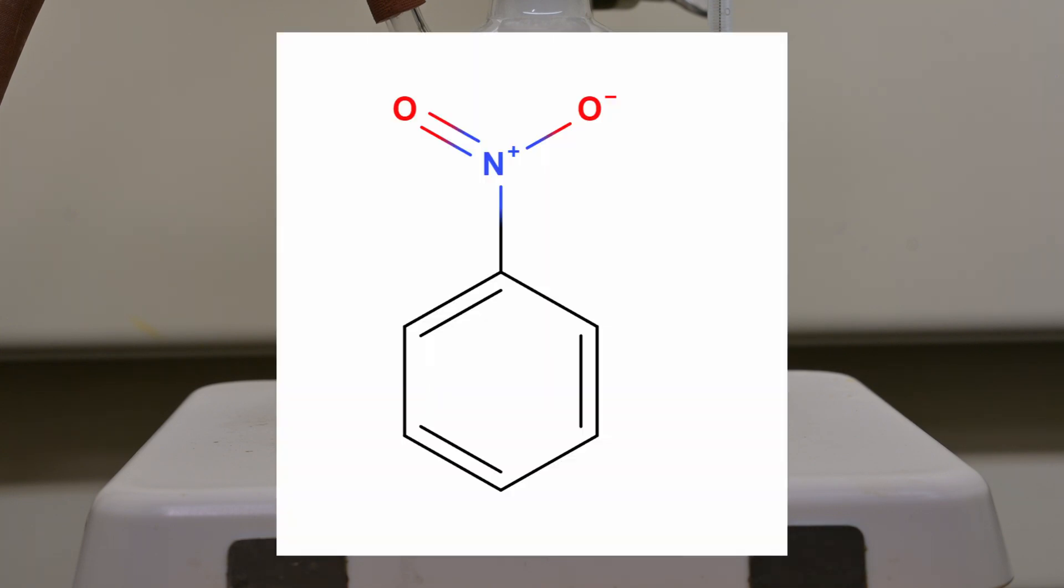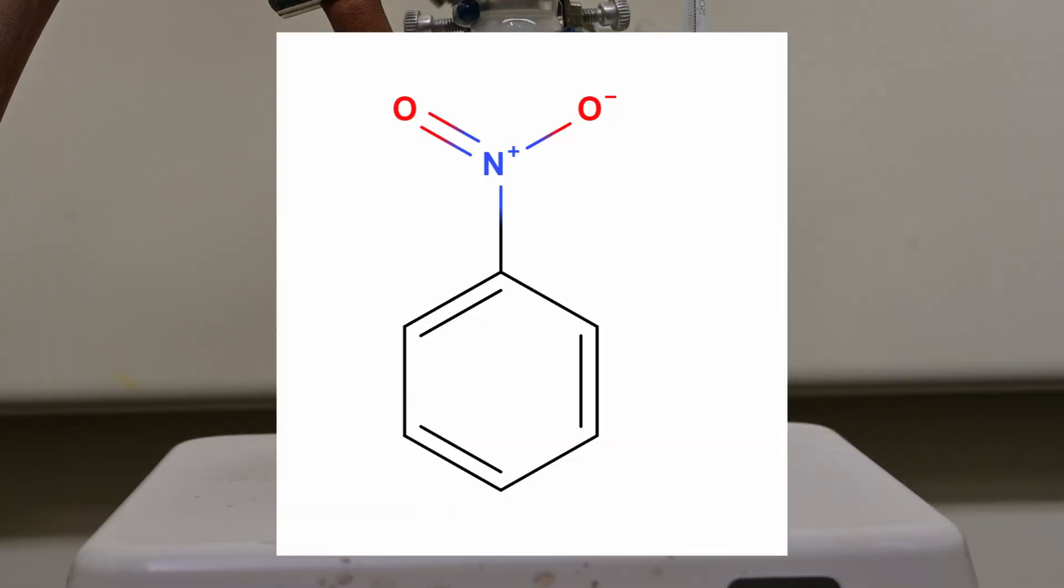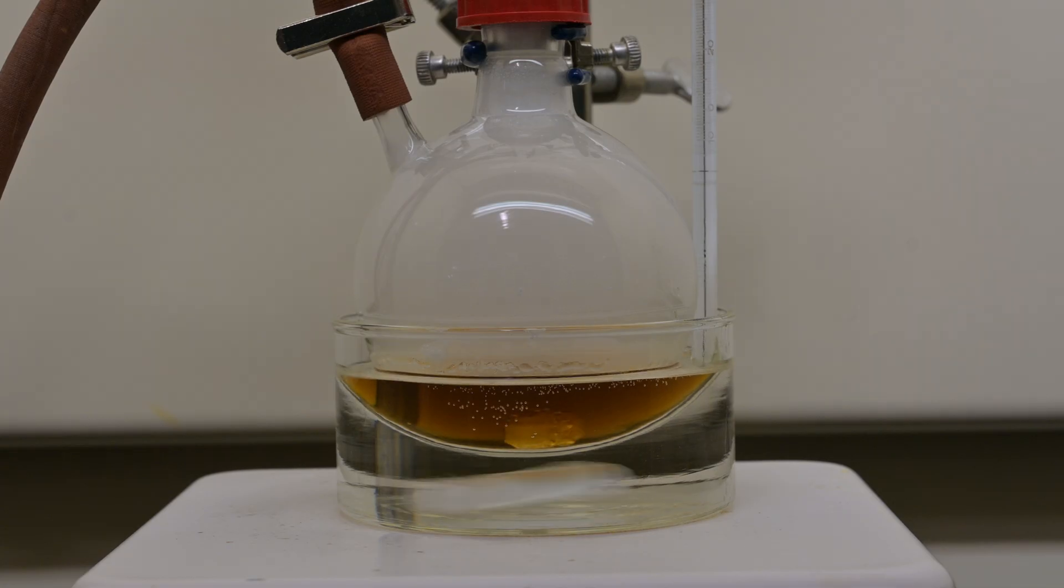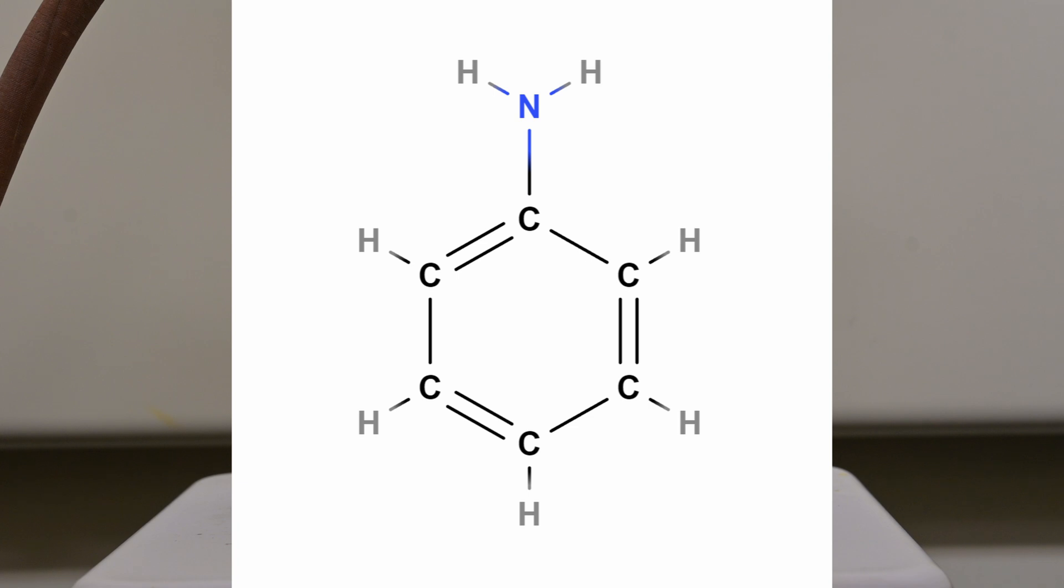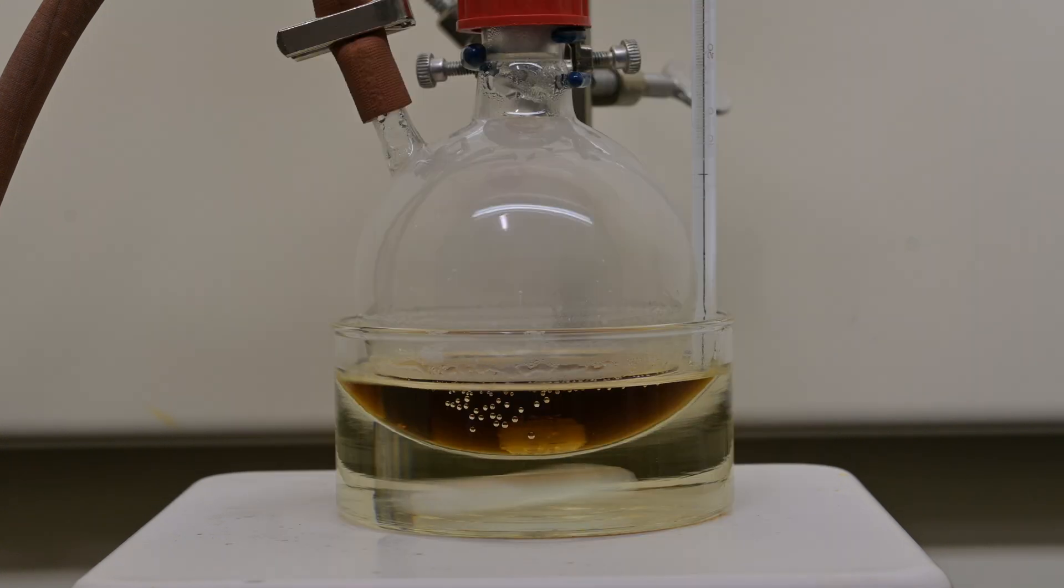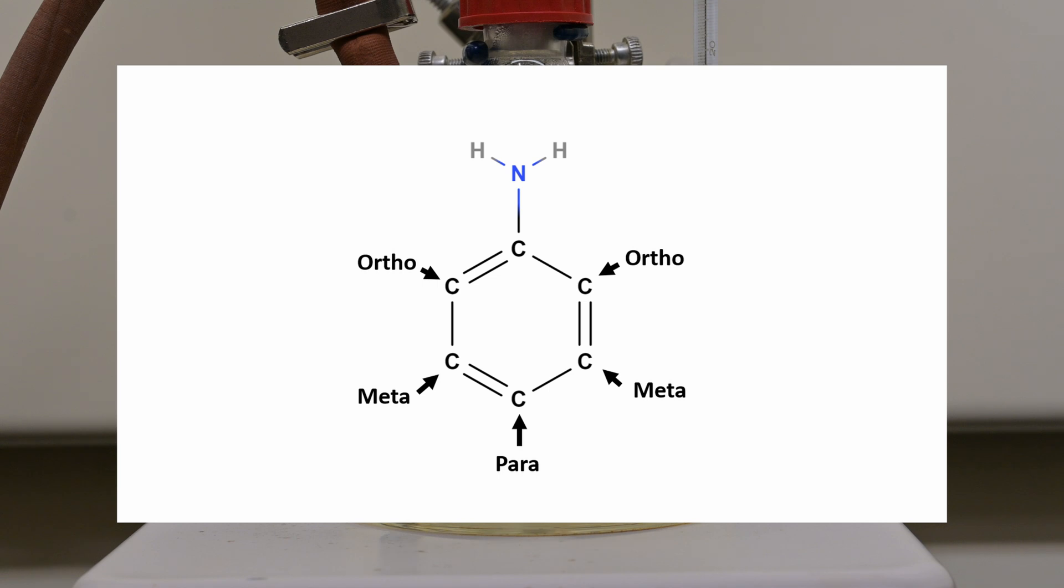If you have something like a nitro group, this would strongly deactivate the ring by inductively pulling electrons towards the group. This causes the density of the electrons to drop, leading to the substitution occurring on the meta position. In our case, we have an amine that is a strong activator, which increases electron density in the ring, leading to either ortho or para position substitution.